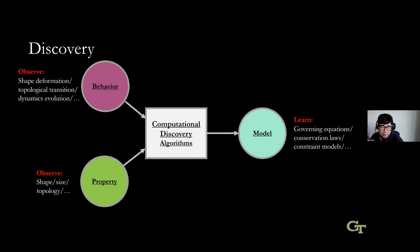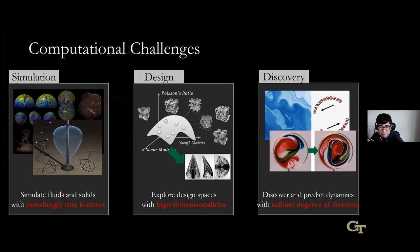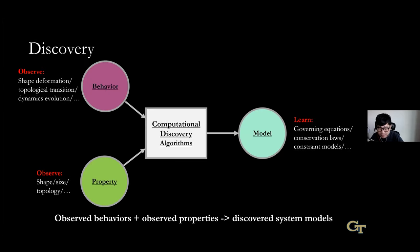For discovery, it's about further switching two components. The pipeline is: given observed behavior and observed property — for example, when we look at a video of fluid, we know how the material is transported on screen, and we know the size and shape of this material domain — what we want to figure out is the governing equation, the conservation law, the constraint model. We use machine learning algorithms to reason the models behind these observations.